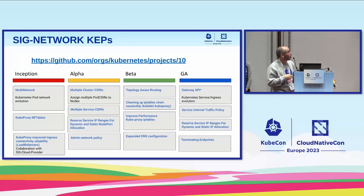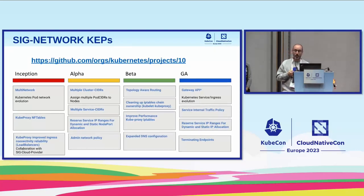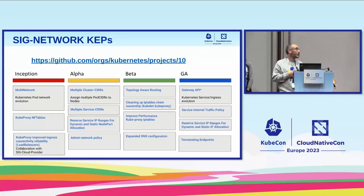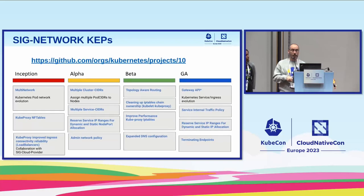For graduation, we have two important features. One is the terminating endpoints feature, which was important for zero downtime deployment. The other is service traffic policy. After a lot of discussion — because we have another feature with topology-aware routing that this collides with — what we decided is: service traffic policy determines that if traffic is internal and local, it's only able to reach pods or endpoints that are in the same node. It's mimicking the external traffic policy for service, but for internal.